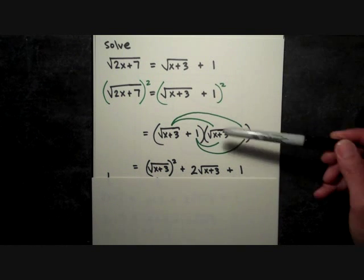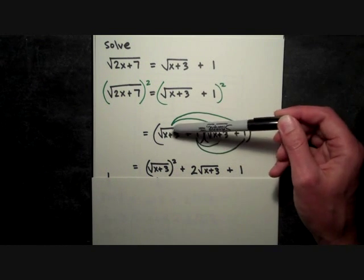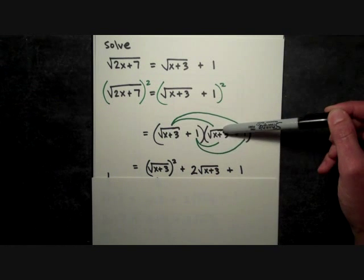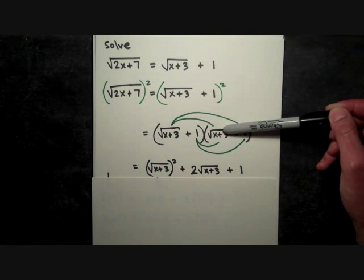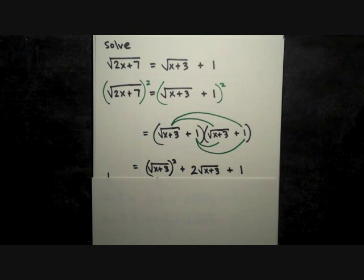The inner and the outer products—look at the inner product here, 1 times √(x+3), and the outer product is another 1 times √(x+3). So there's two of those when you add them up, and 1 times 1.